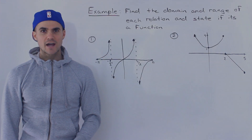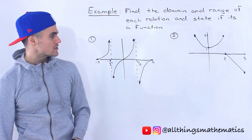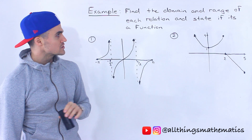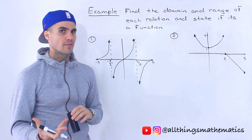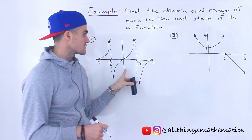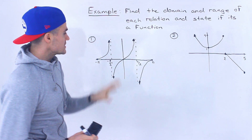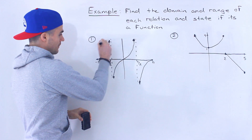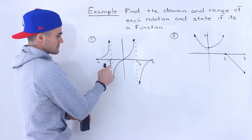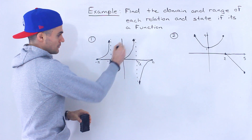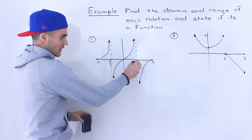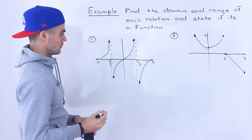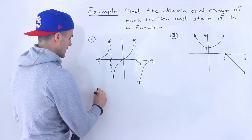Welcome back. We have to find the domain and range of each of these two relations here, and then we have to state whether or not they are functions. Starting with this first graph, notice we have three sections: this section, then a vertical asymptote at negative pi over two, then another section, then a vertical asymptote at positive pi over two, and then this third section. Let's start with the domain.